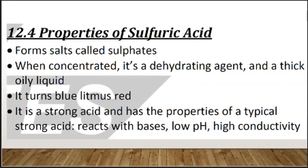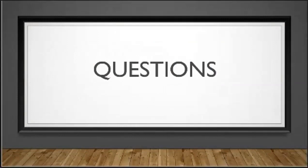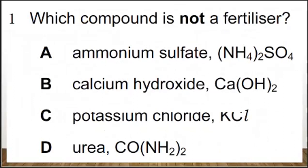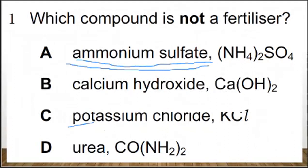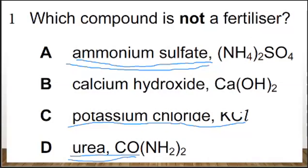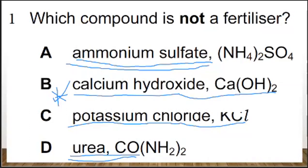Now let's try some practice questions. Question: which compound is not a fertilizer? Ammonium sulfate is a fertilizer, potassium chloride is also a fertilizer, urea can act as a fertilizer, but calcium hydroxide is not a fertilizer. The answer is B — calcium hydroxide is not a fertilizer.